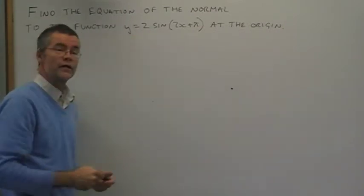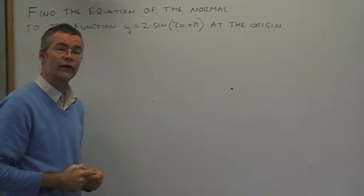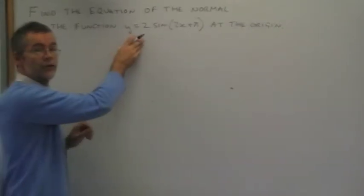First we define the gradient of the curve itself, and the gradient of the curve itself is the same as the gradient of the tangent to that curve. First you have to differentiate this to find the gradient.